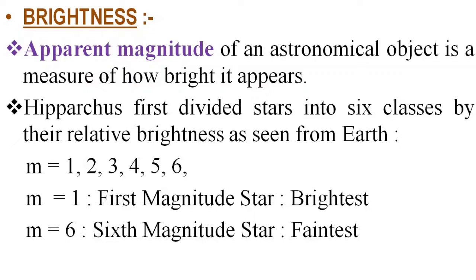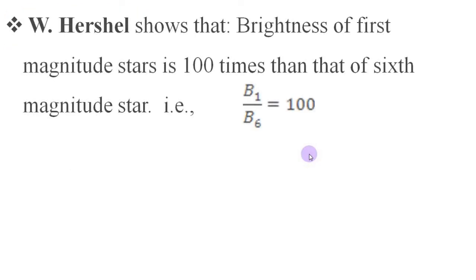The brightest stars are assigned first magnitude, denoted as m = 1. And the faintest stars visible to the naked eye are assigned to the sixth magnitude, denoted as m = 6. Hence, according to the magnitude scale, a smaller magnitude means a brighter star. W. Herschel shows that the brightness of a first magnitude star is 100 times that of the sixth magnitude star. If brightness of first magnitude star is b₁ and that of sixth magnitude star is b₆, then b₁/b₆ = 100.